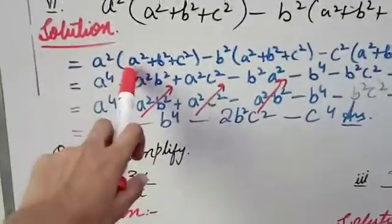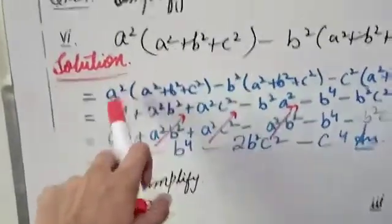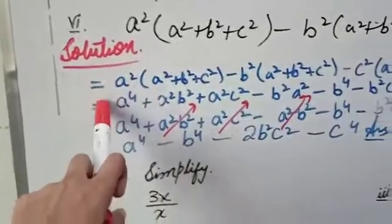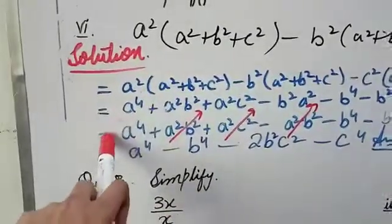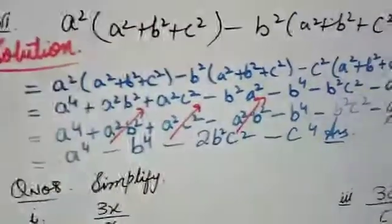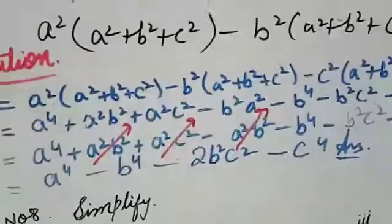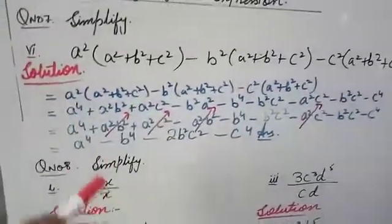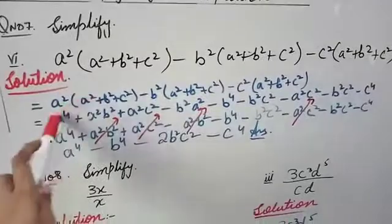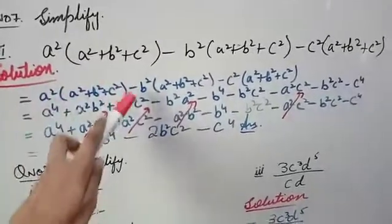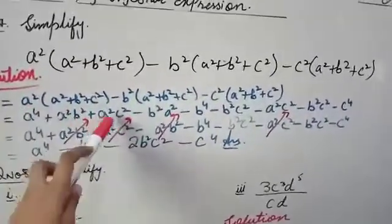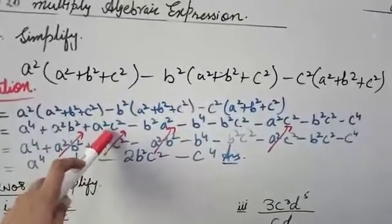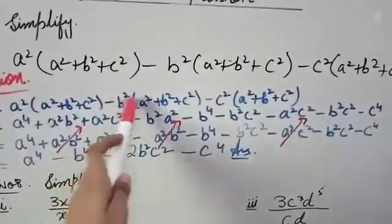When you multiply a² by a², since the bases are the same, the powers will add. So a² × a² = a⁴. Then a² × b² gives a²b², and a² × c² gives a²c².